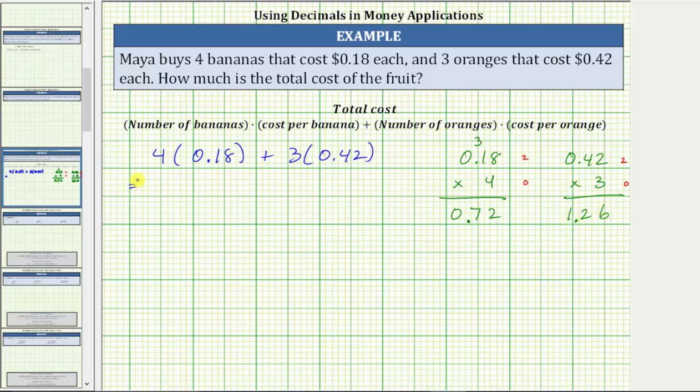So the given expression simplifies to 0.72 plus 1.26, and now we determine the sum. We have 0.72 plus 1.26.